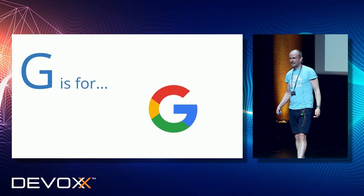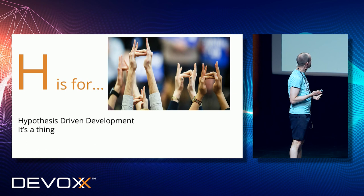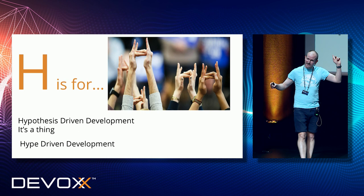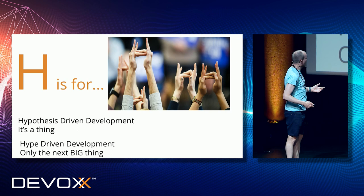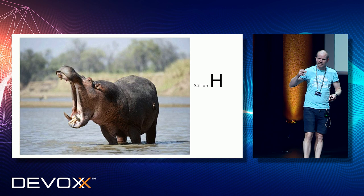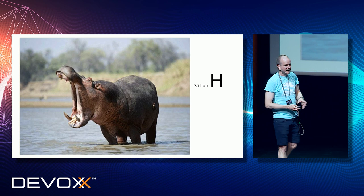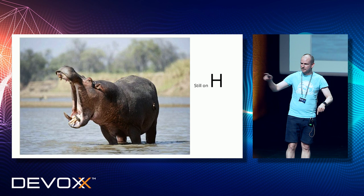G: Google-driven development — pretty much the same as AWS-driven development, but you're using Google Cloud. H: I hope people do hypothesis-driven development, because that's a good thing. But it also stands for hype-driven development, which is only the next big thing — repeat offenders in this space would be microservices and Kafka. Kafka's a repeat offender in a lot of spaces, actually. It also stands for HiPPO — in English, HiPPO stands for the Highest Paid Person's Opinion, and the HiPPO is that highest paid person. HiPPO-driven development is when you have a meeting with about 20 people in the room, everybody gives their opinion, and then the HiPPO decides what to do — even if she's outvoted one to 20.